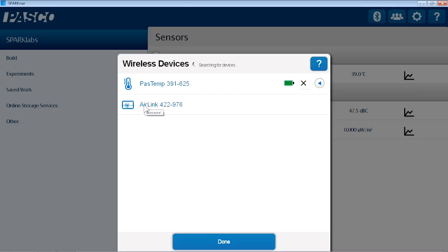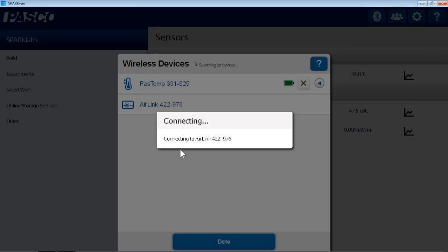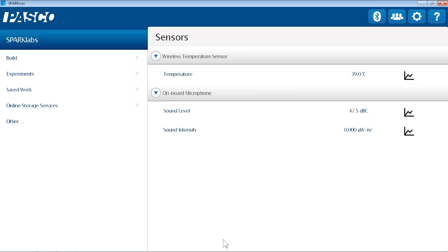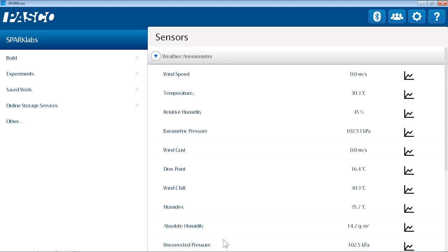And now I see the air link in my device list. If I touch on air link, it will connect to the air link. And on my home screen, I'll see all the measurements that are available with this multi-measure sensor.